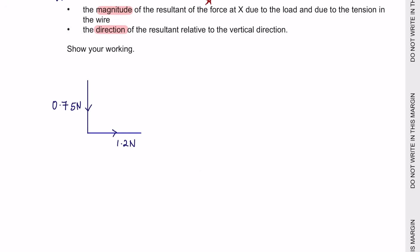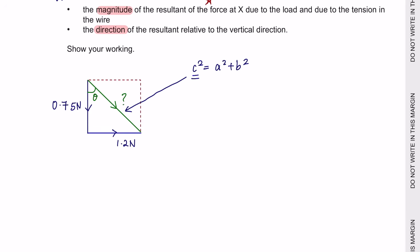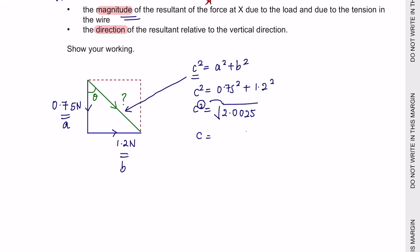We sketch the vectors at right angles to each other, then complete the rectangle by drawing a diagonal from corner to corner to get the resultant vector. Using Pythagoras' theorem, c² = a² + b², where c is the hypotenuse. So √(0.75² + 1.2²) gives a magnitude of 1.42 newtons.